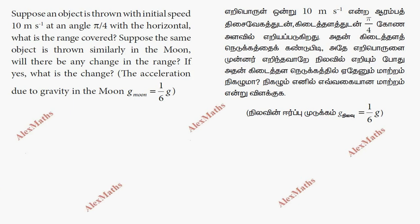Hi students, this is Alex. Here in the video, an object is thrown with initial speed 10 meter per second at an angle of 5π/4 with the horizontal. The initial speed of the body is 10 meter per second, and theta is 5π/4 with the horizontal.